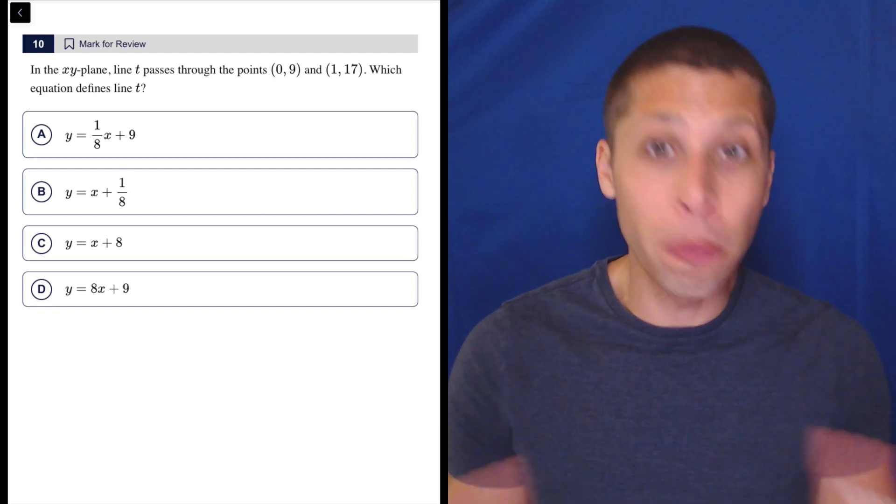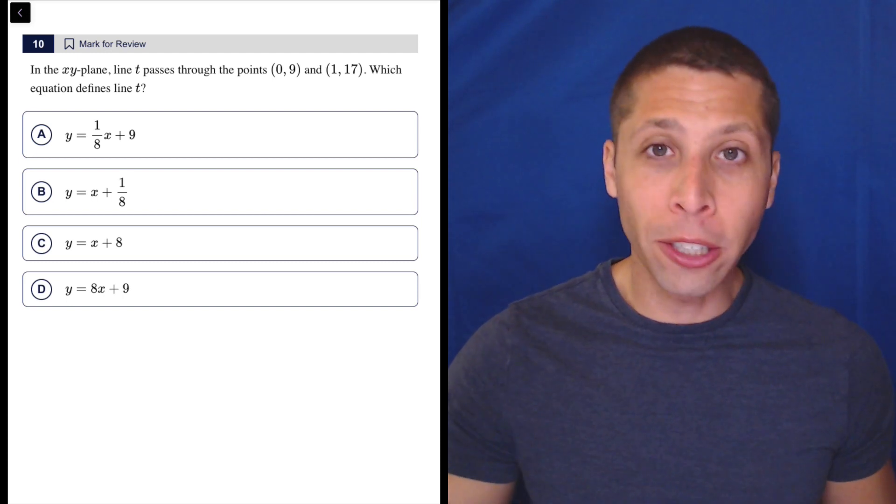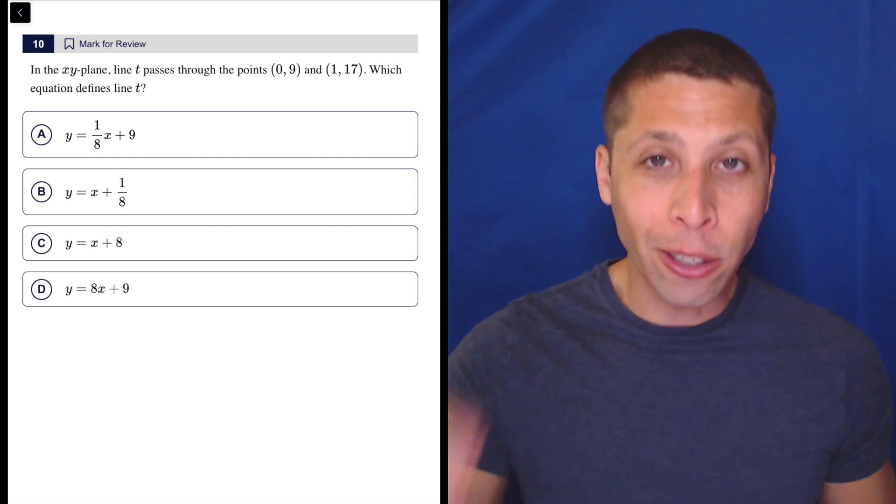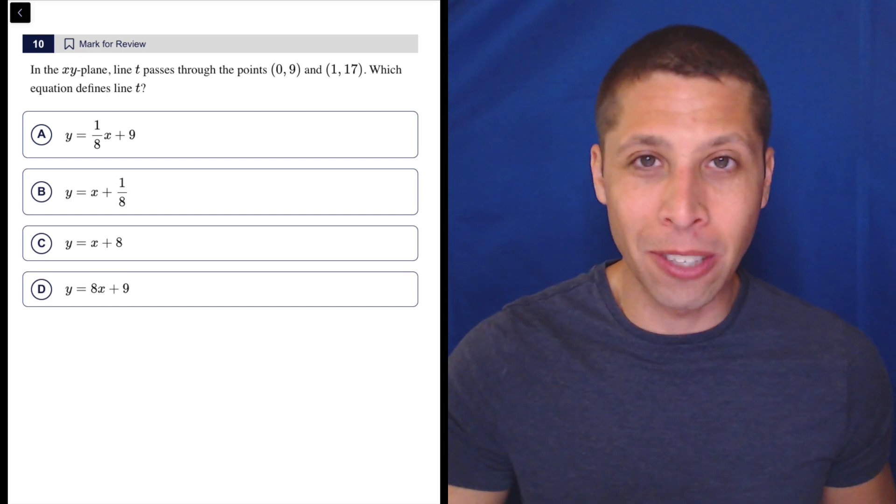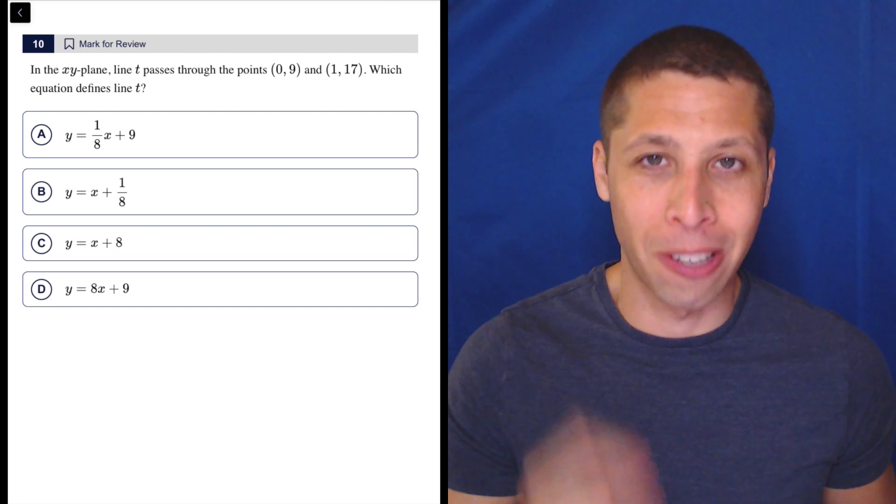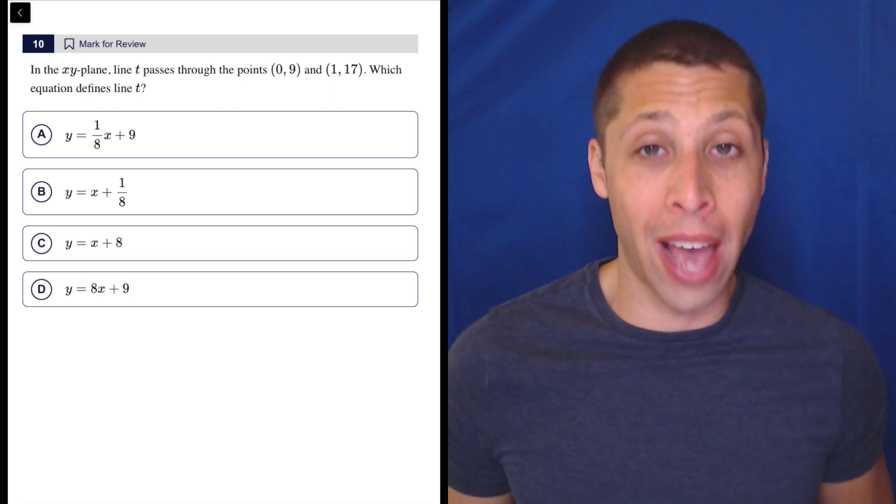This question, there's two paths you can basically take. Some of you are going to look at this and be like, I can calculate the slope of this line. I'm going to take (0, 9) and (1, 17) and put those into my slope formula and calculate the slope. And that's correct, you can do that.